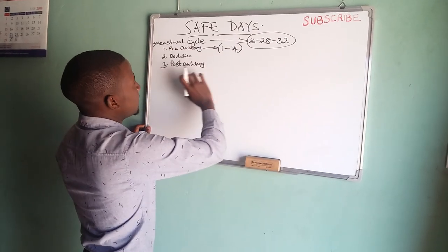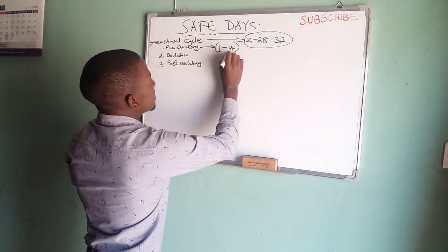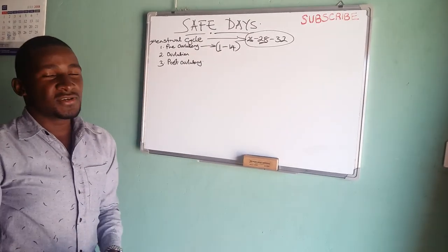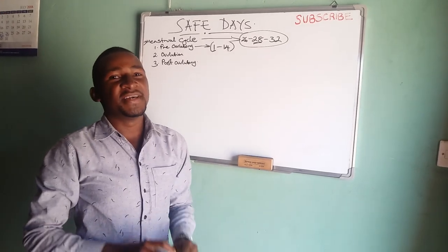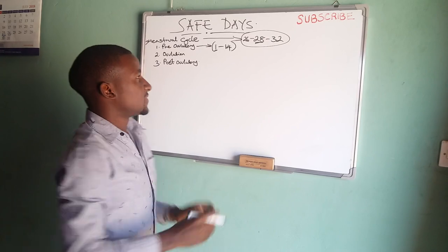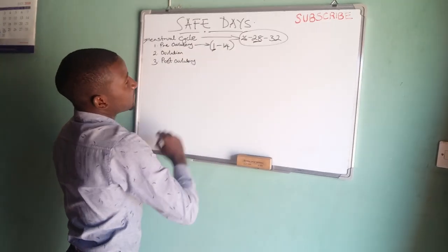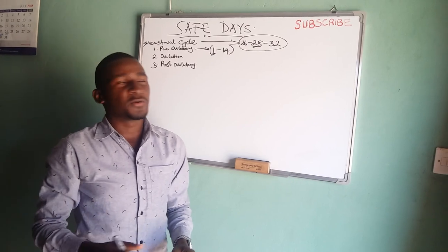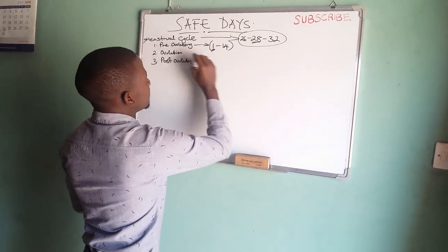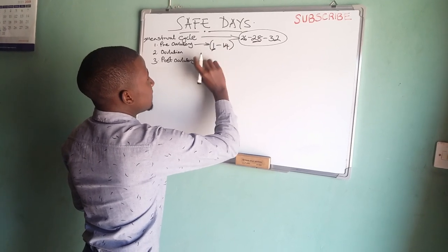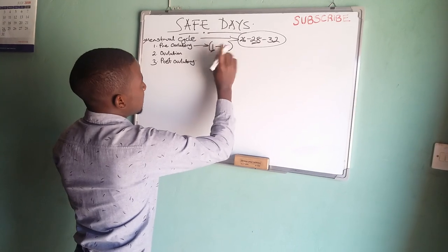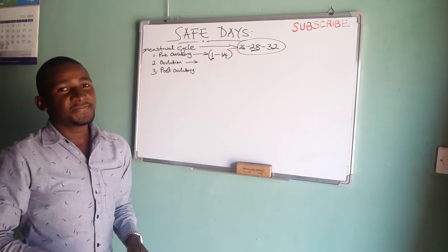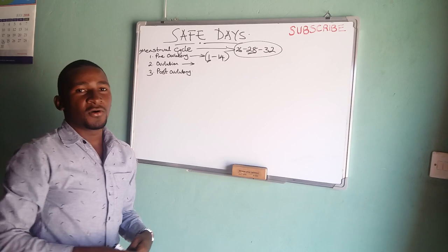When we come to the pre-ovulatory phase, we have day one to the 14th day — for the case of a 28-day calendar. Day one is the day when you first see your menses or the blood. This bleeding can take three to five days, or even seven days for some people. The pre-ovulatory phase then continues from those days up to day 13 or 14, and this is the period of development or growth of the egg.